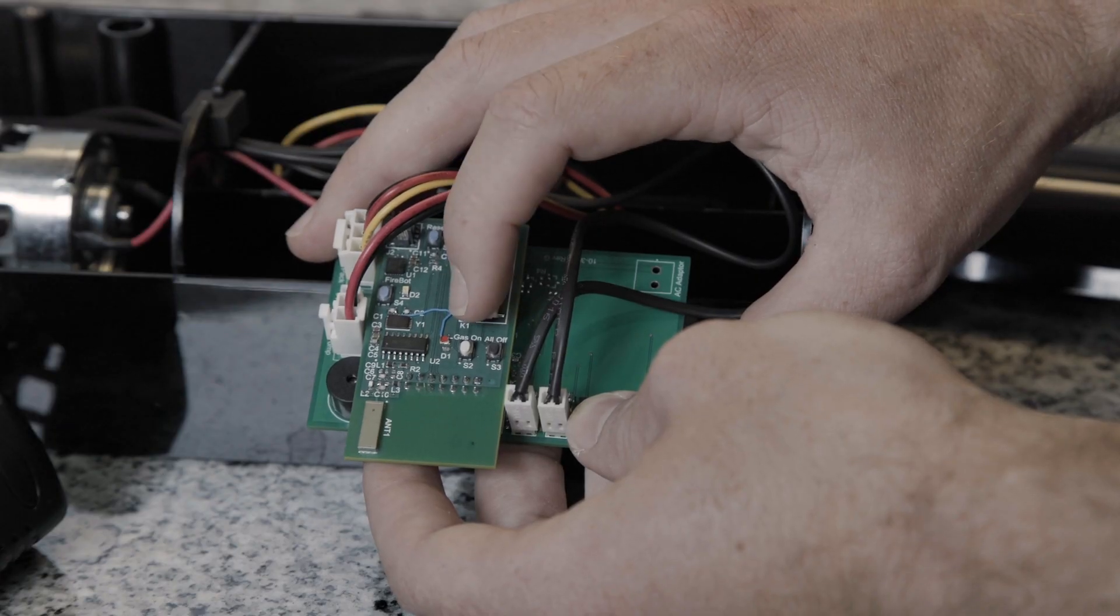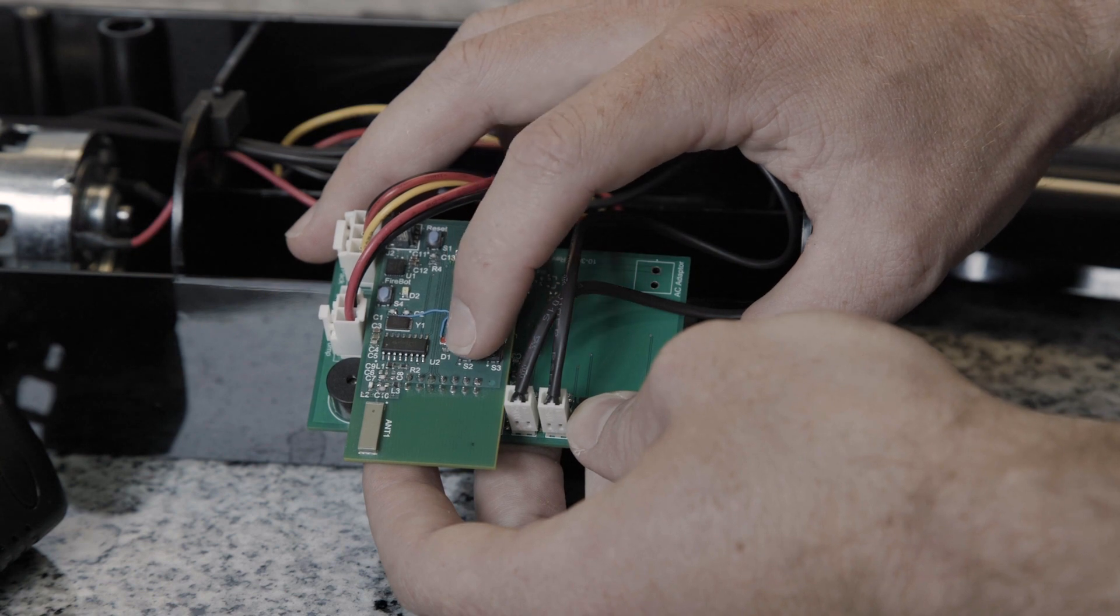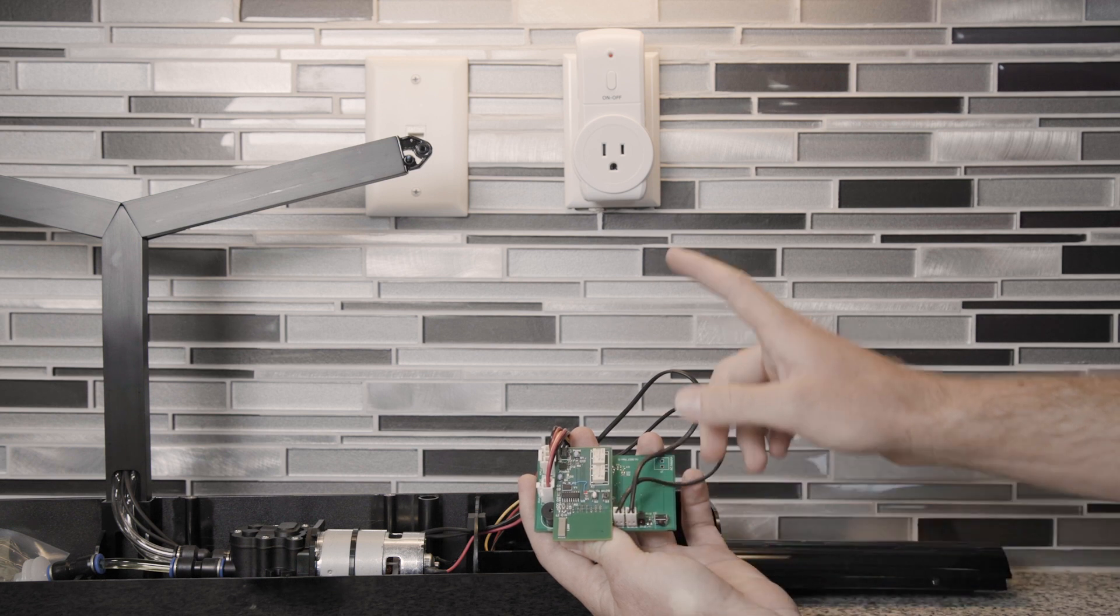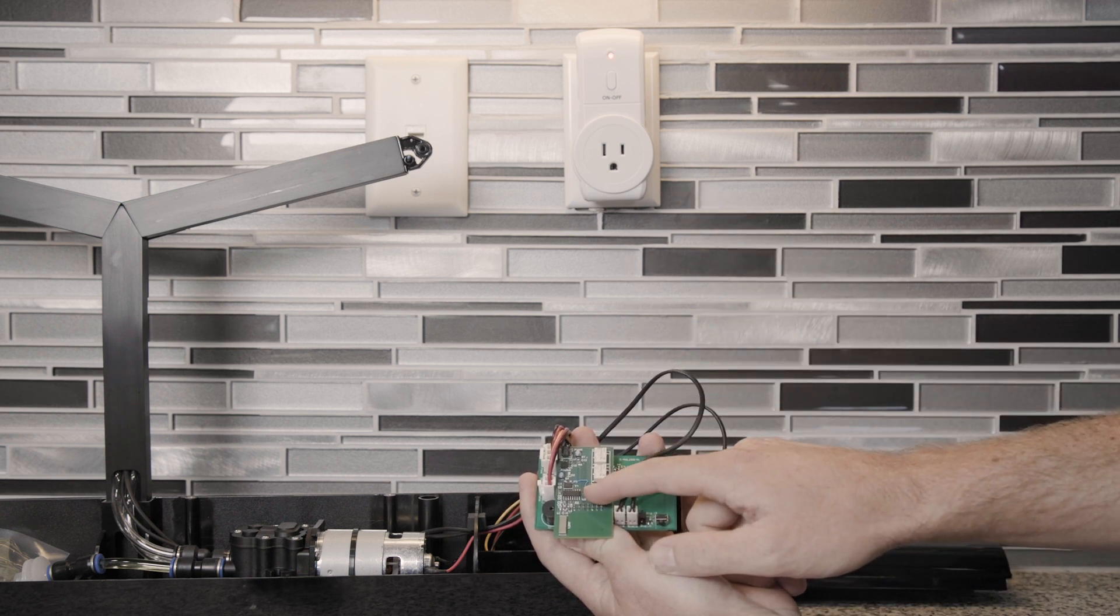Once the circuit board and the smart switch are paired together, you can confirm this by pressing the off and on button. This will turn the smart switch on or off.